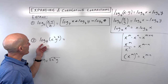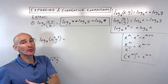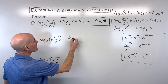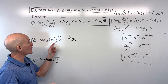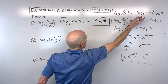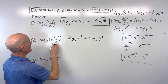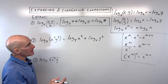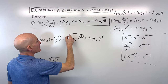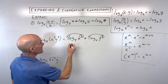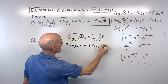Number 2: log base 4 of x squared times y cubed. You might want to break it into smaller steps. The x squared and y cubed are side by side, so they're multiplied — write them as a sum of two logs, keeping base 4 the same. Then use the power property to bring each exponent down in front: 2 log base 4 of x plus 3 log base 4 of y. That's fully expanded.